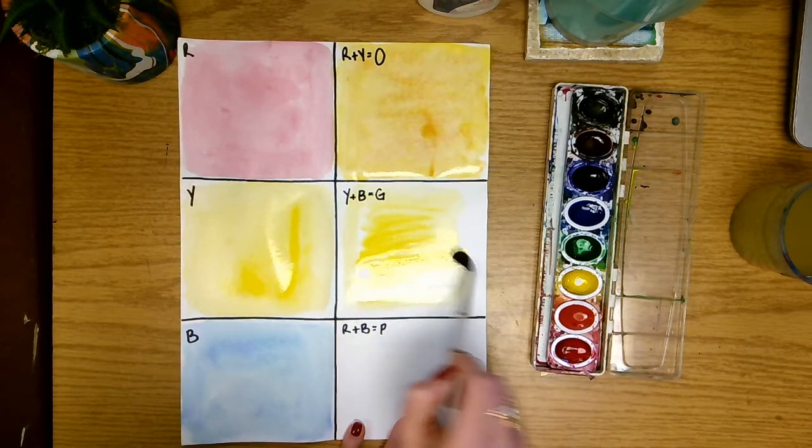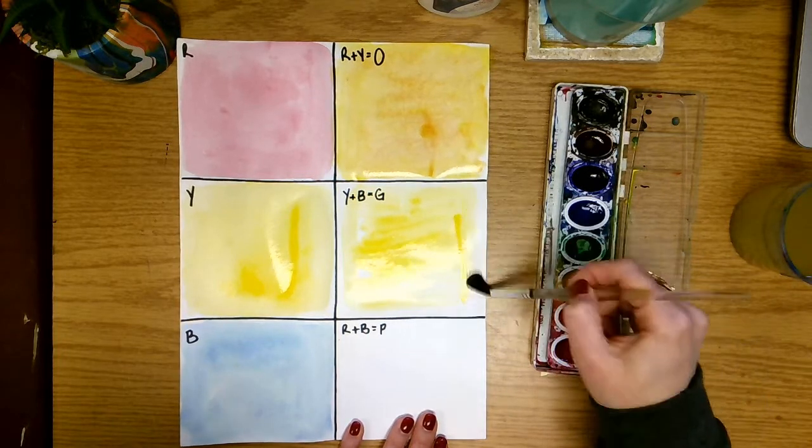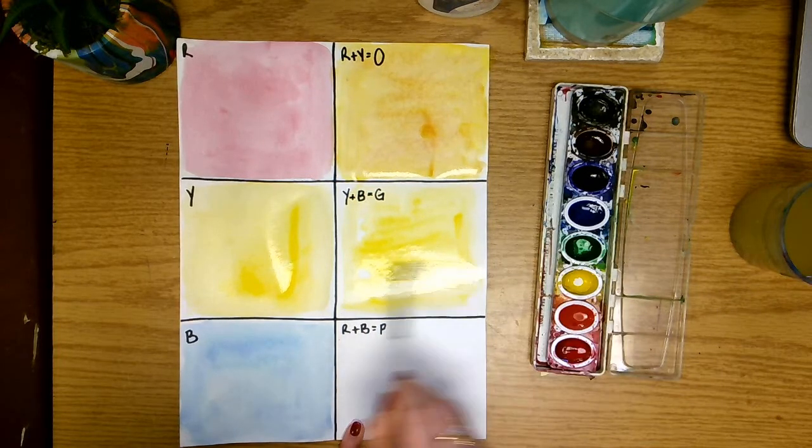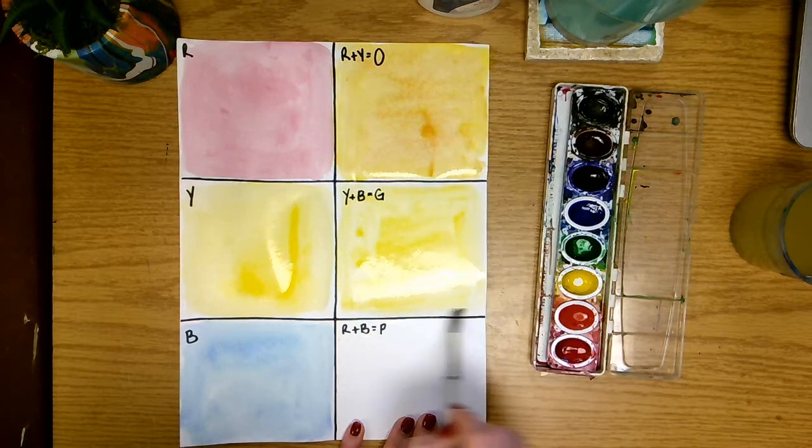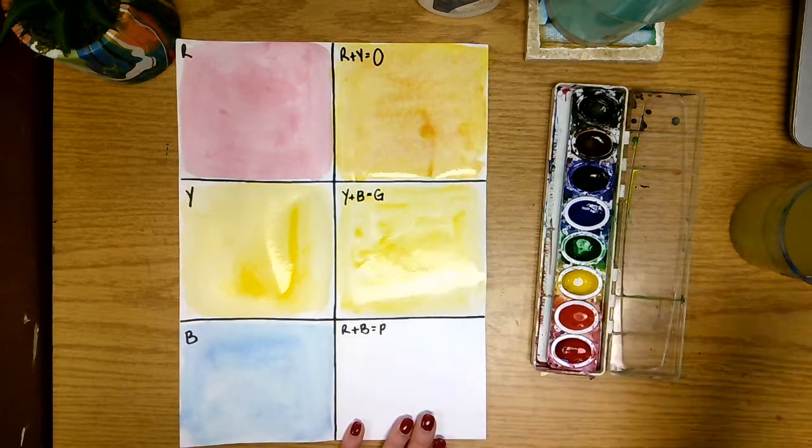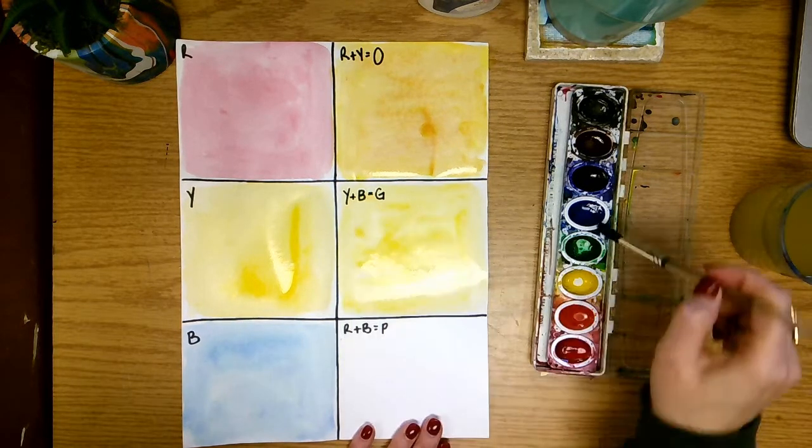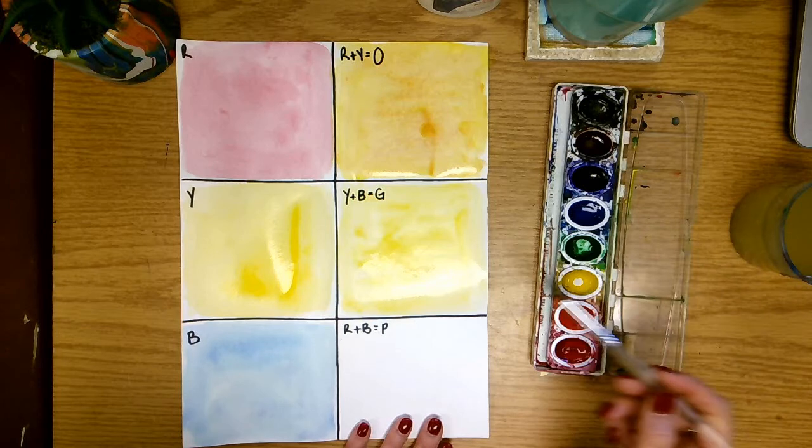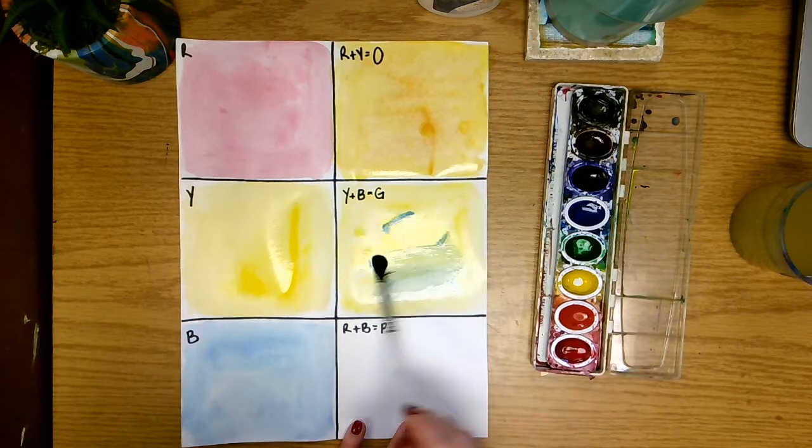So we're going to take our yellow paint first. We're going to put it in our square. We're going to get a little bit more water, a little bit more paint. And remember we don't want our yellow to dry. We want to make sure that we can put our darker color on top while it still is wet. So the next one is blue. I'm going to take just a tiny bit of blue and I'm going to put it on here in my yellow and then mix it up.